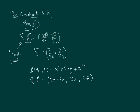So it's this vector. It's as easy as that. Just take the function f of x, y, z, differentiate it with respect to x, that's your x component, differentiate it with respect to y, that's your y component, and differentiate it with respect to z, that's your z component.